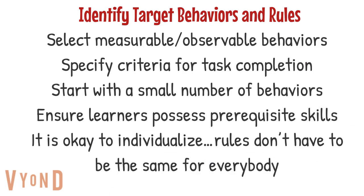When identifying target behaviors and the rules, remember to select measurable and observable behaviors. You can review chapter three for guidance on this. Specify the criteria for task completion — what is considered a correct response before earning the token. Start with a small number of behaviors; target maybe one, two, no more than three behaviors at a time.